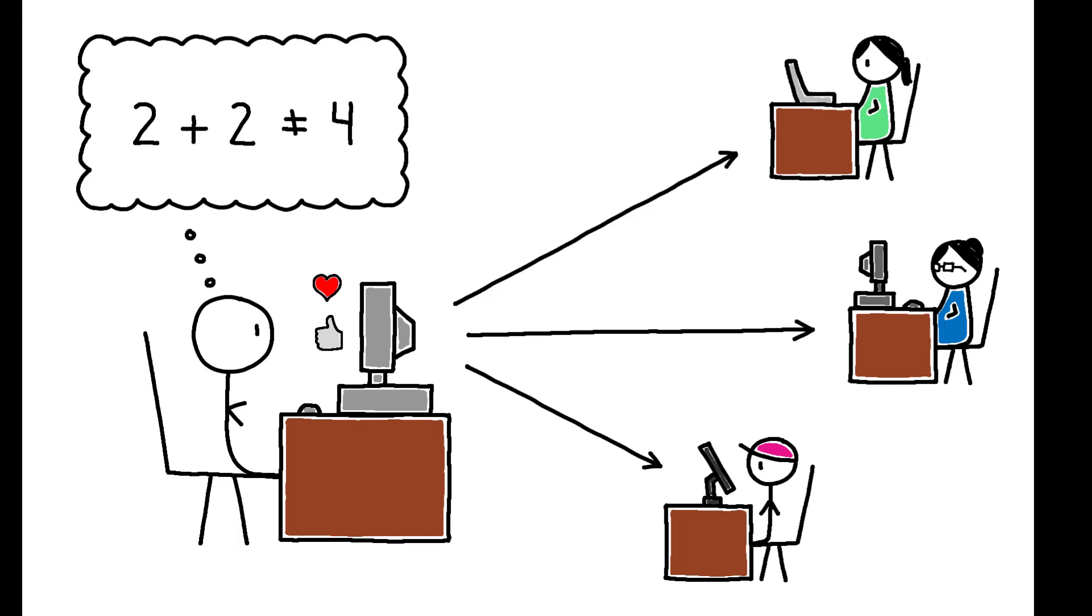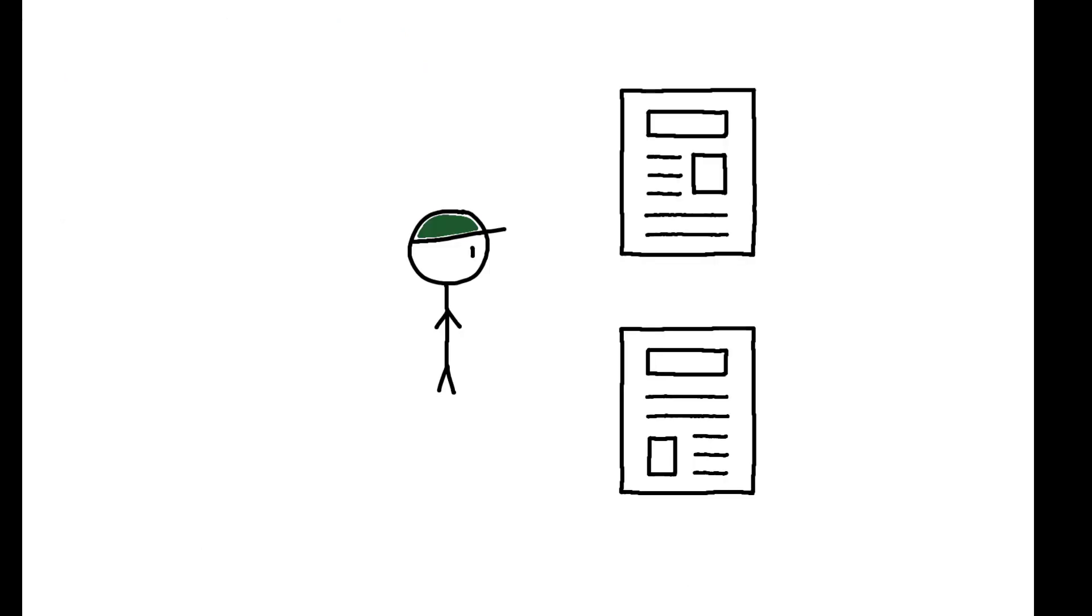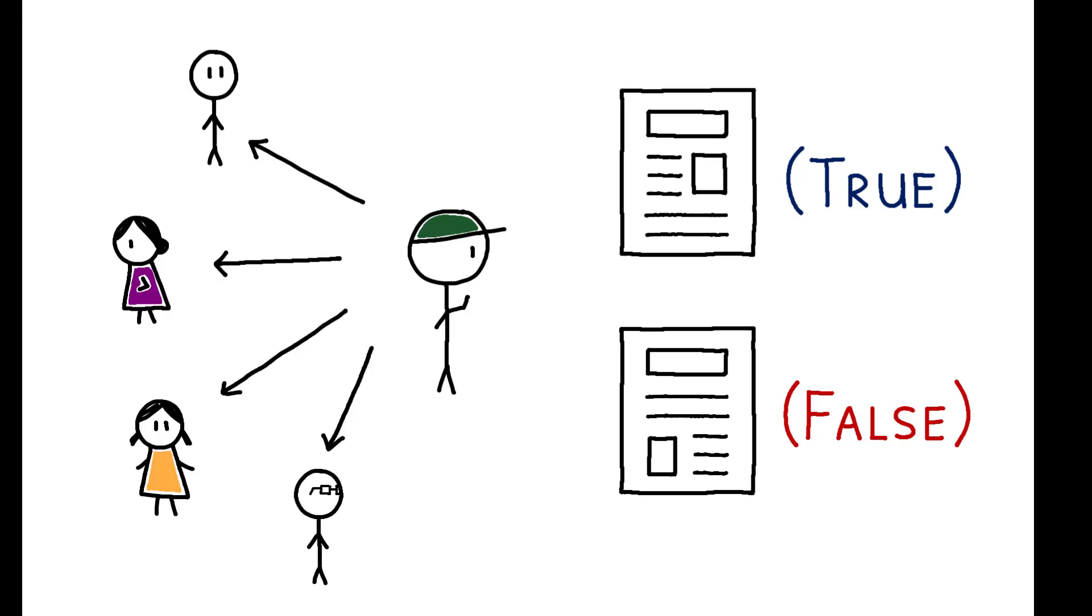This paper studies these dynamics in the absence of motivated beliefs. When there is no intrinsic motivation to believe something, to what extent are individuals able to detect lies, and what are the implications for what kinds of information are shared and believed?